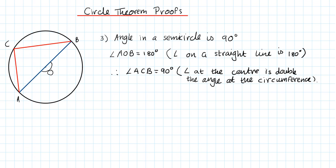So this angle is 90 degrees. There we go. We've proved that the angle in a semicircle is 90 degrees.